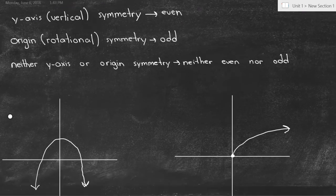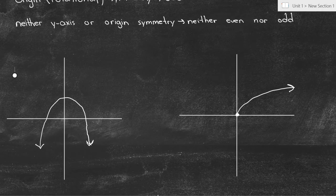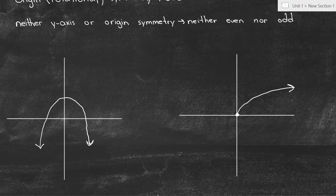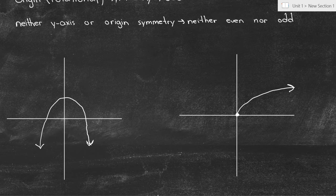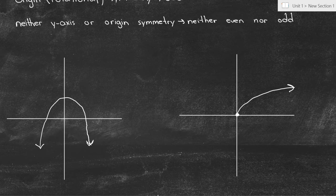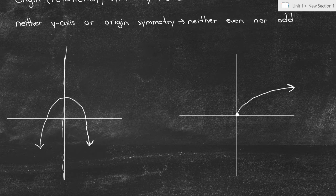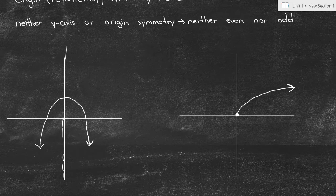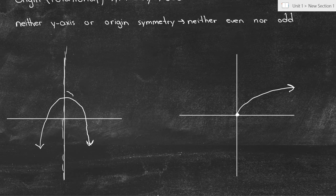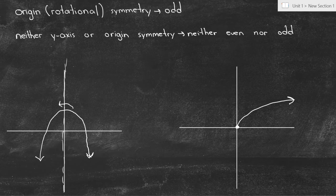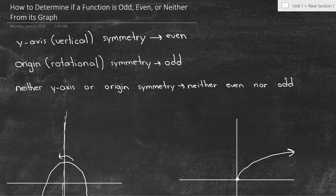Does it have y-axis symmetry? Well, if I reflect it over the y-axis, so if I was to turn my page in half at this y-axis right here, this one right there, at this line, would the graph look the exact same? And that answer is yes. Because I could rotate it right here and have the same graph, it means that it is y-axis symmetry, which means the function's even.